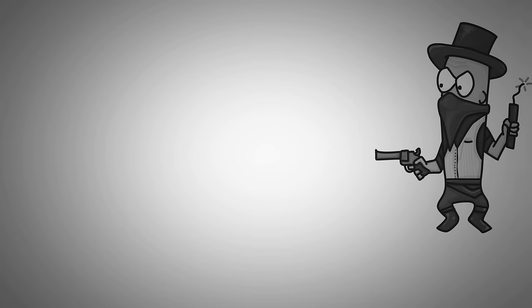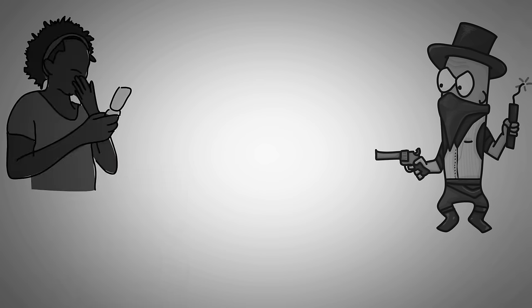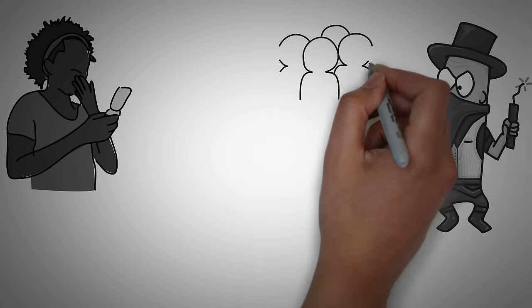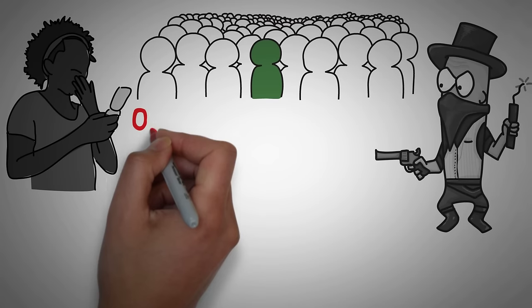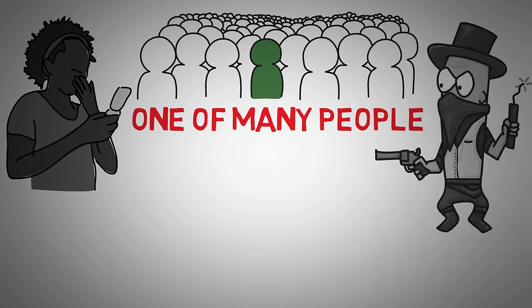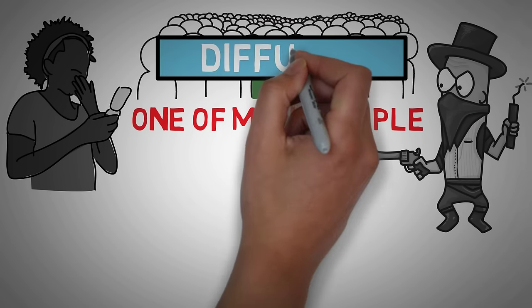For example, if you're the only person witnessing a robbery, you're the only person who has the responsibility to stop the crime or report it to the police. However, if you're in a crowd and you witness a robbery, you are one of many people who could potentially stop the crime and report it. When the same responsibility is diffused among a larger group of people, everyone is more likely to say someone else will do it.